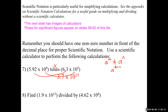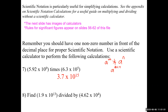When using your calculator, if you want the answer in scientific notation, make sure your calculator is set to the SCI function. On the TI-30X, hit the second function, select the mode, and switch to SCI. If you don't do that, the answer will come out in standard form and you'll have to convert it.